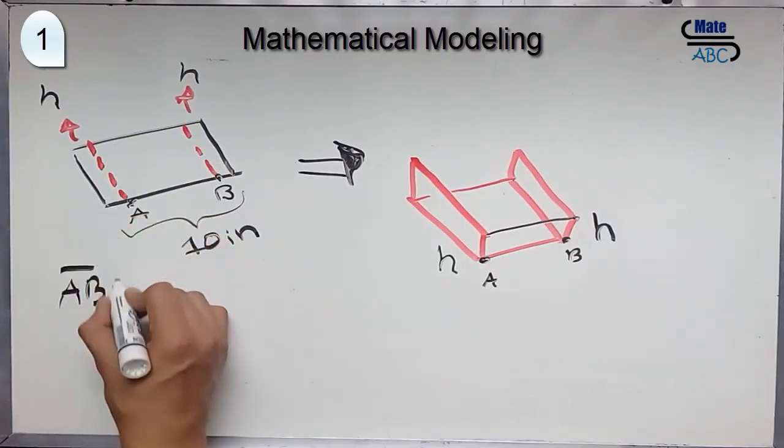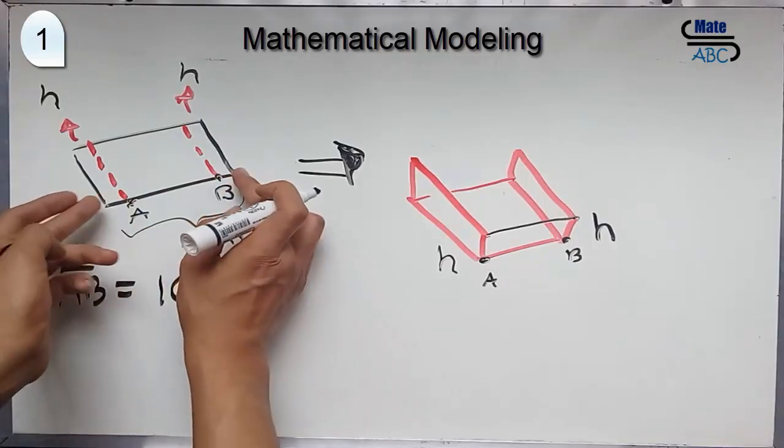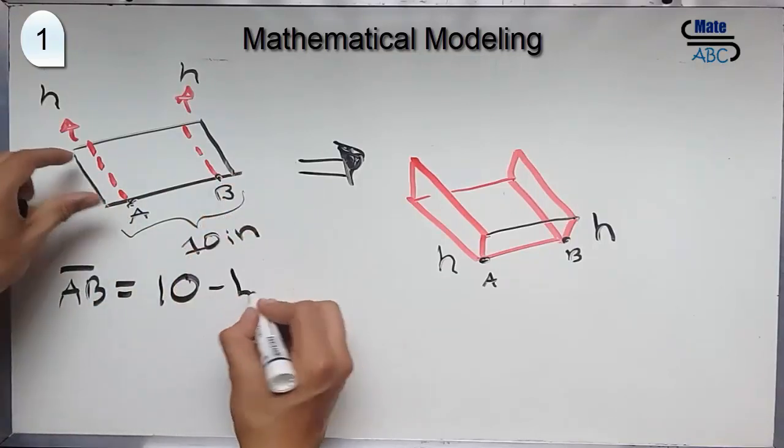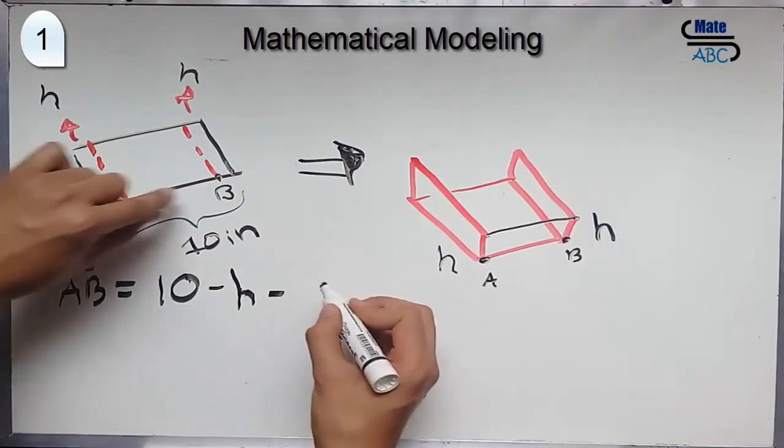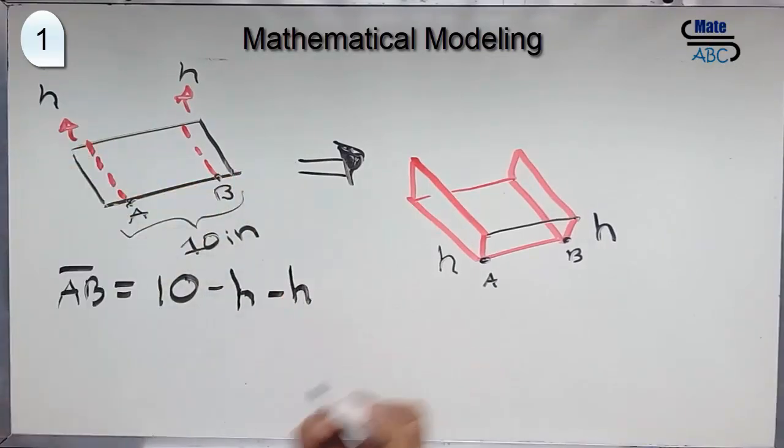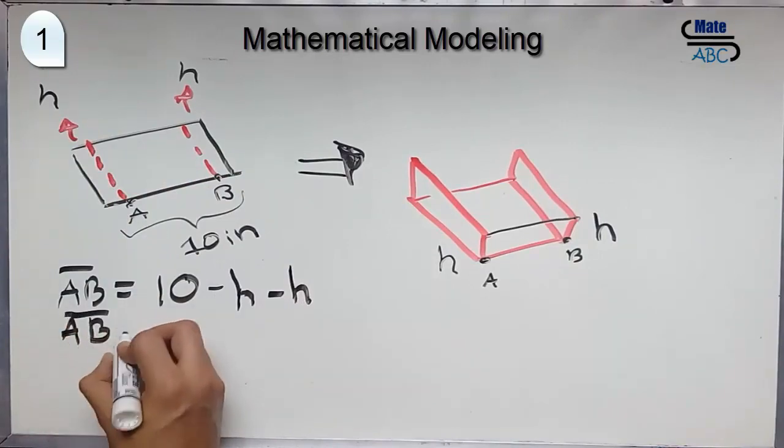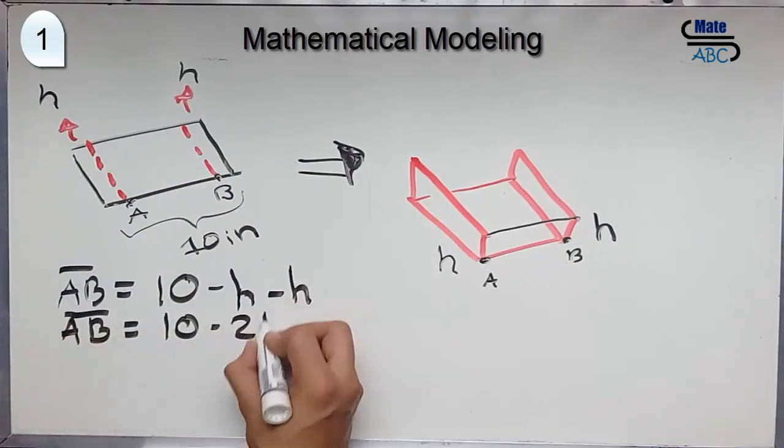AB equals 10 inches minus H. That you are subtracting this. And also this minus H. And AB equals 10 minus 2H.